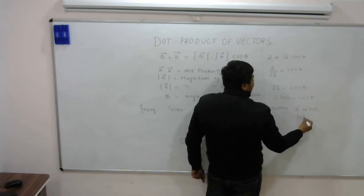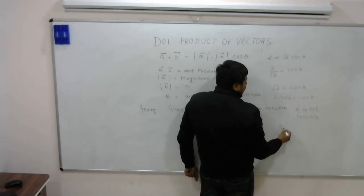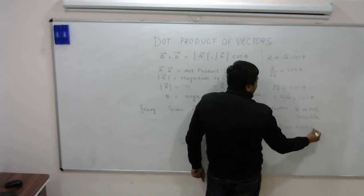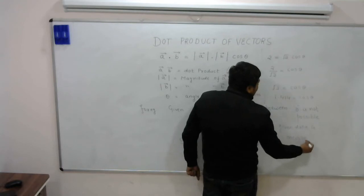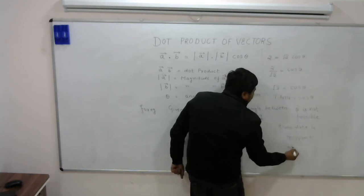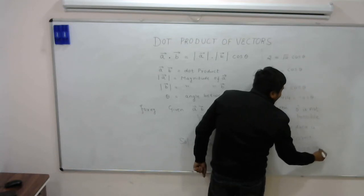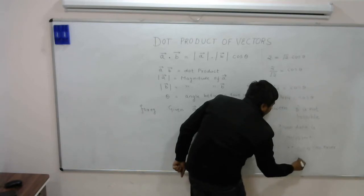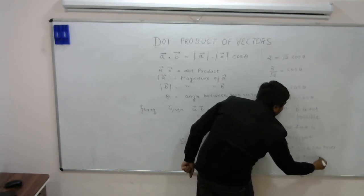The given data is incorrect. Why? Because cos theta can never be greater than 1. It can never be greater than 1.